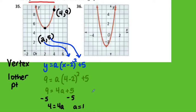So my equation then would be y equals x minus 2 squared plus 5. So that's just the parent function shifted.